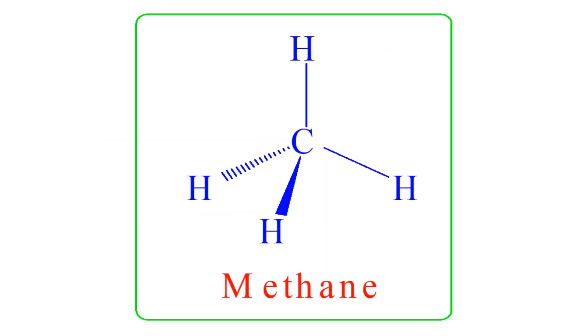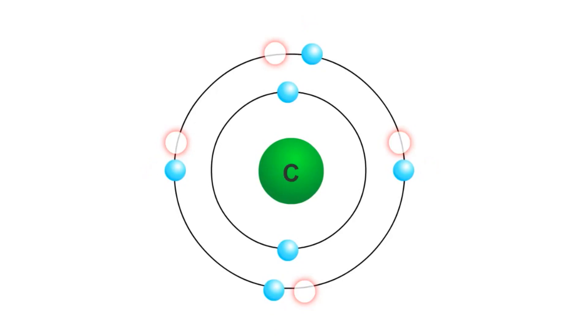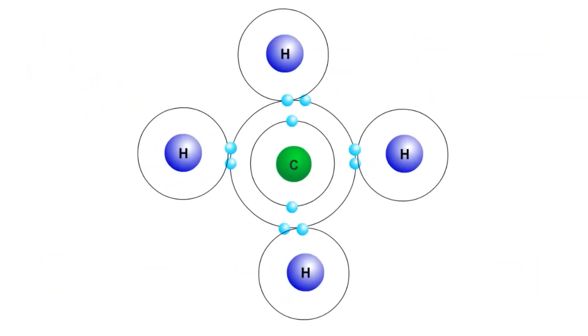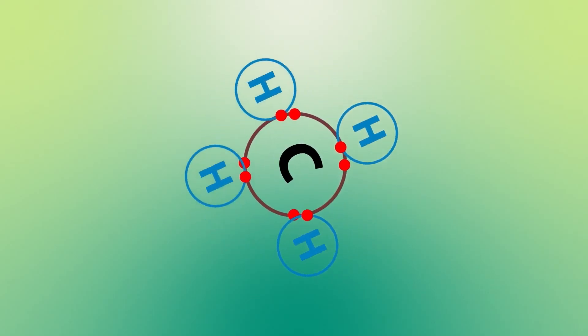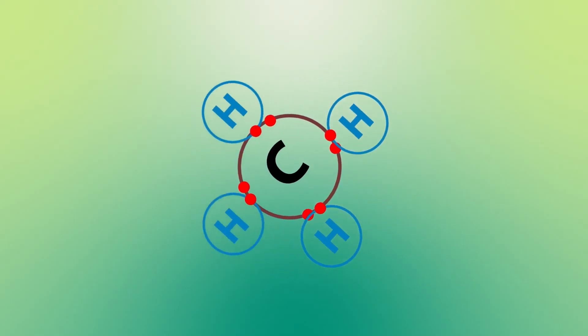Let us consider another example: the formation of methane. The carbon atom has four electrons in its valence shell. In order to complete its octet, carbon atom requires another four electrons. The hydrogen atom has one electron in its valence shell. Four hydrogen atoms share one electron each with carbon atom to form four covalent bonds. This way carbon now has a complete octet and all four hydrogen atoms have a complete duplet.